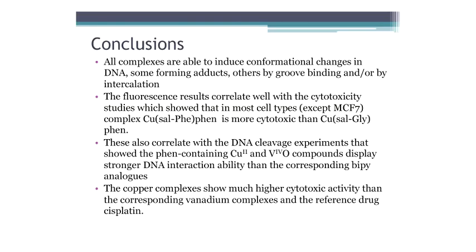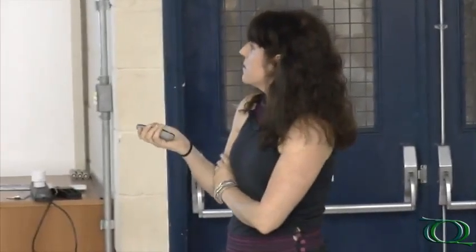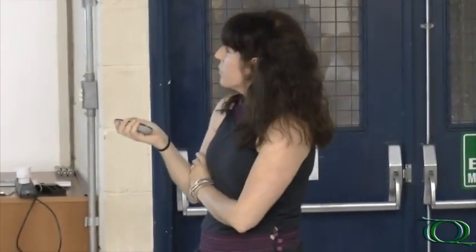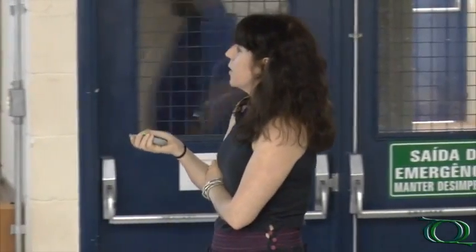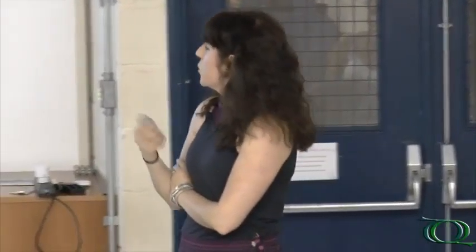In the case of vanadium compounds, we could see the formation of adducts — new species, probably by covalent binding. We believe that when we have compounds containing phenanthroline, the process involves intercalation. The fluorescence results correlated well with cytotoxicity, showing that in most cell types the phenanthroline complex is more cytotoxic than the bipyridine analogue, and it also shows higher quenching. These results also correlate with the DNA cleavage experiments showing that phenanthroline complexes — either vanadium or copper — display stronger DNA interaction ability than the bipyridine analogues.